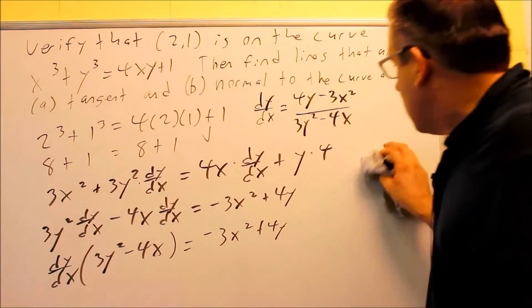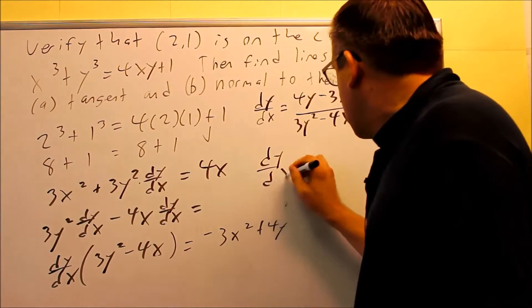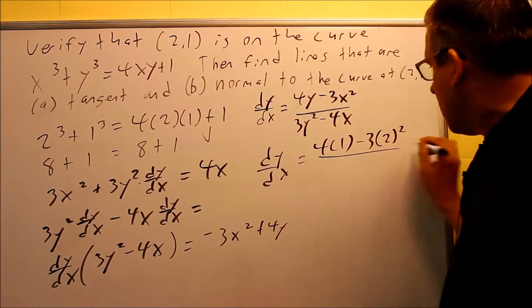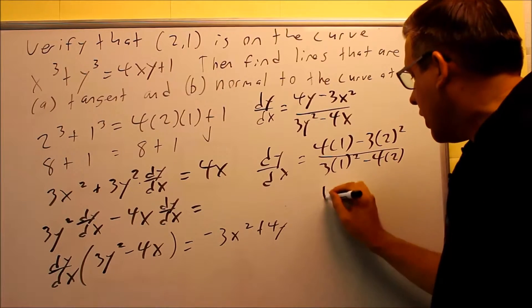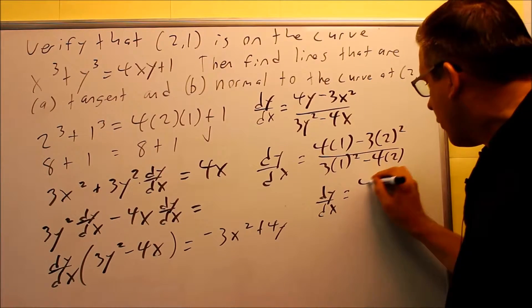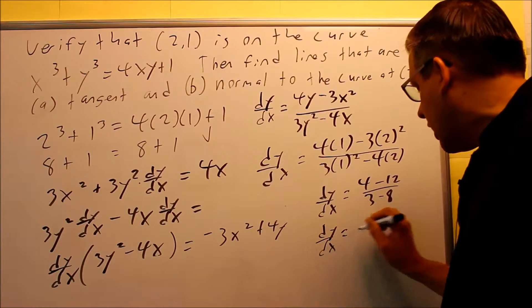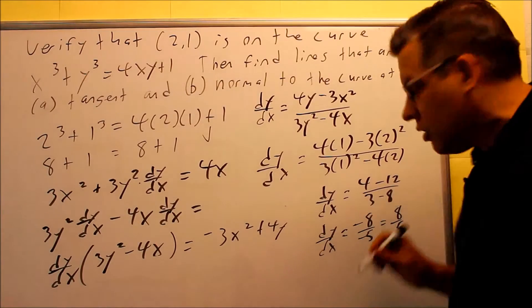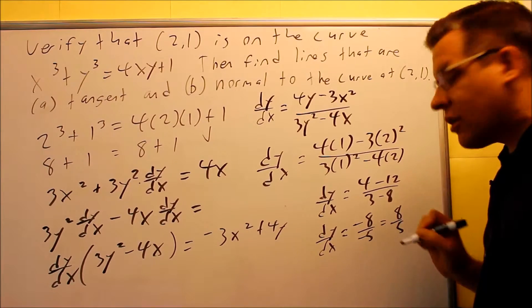So I'm going to erase this here to give us some space, and then when we put that in, dy dx, we'll put the numbers in. So I have 4 times 1 minus 3 times 2 squared. The bottom, 3 times 1 squared minus 4 times 2. And then by working through all that, we get our dy dx slope. So on top, we're going to get 4 minus 12. The bottom, we have 3 minus 8. And then finally, we'll get our answer, which is going to be negative 8 over negative 5, which is 8 fifths. So going through all that, we find that the slope of the tangent of this curve at the point 2 comma 1 is going to be exactly 8 fifths.